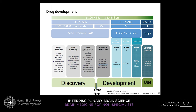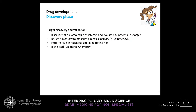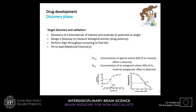In the discovery phase, target discovery and validation is critical — one must identify a protein or receptor that can be affected in the disease, evaluate its potential as a target, design bioassays to measure biological activity, perform high-throughput or medium-scale screening to find hits, and then move to lead development by medicinal chemistry. The pharmacodynamic parameters we have already seen are important to characterize the first hits discovered.